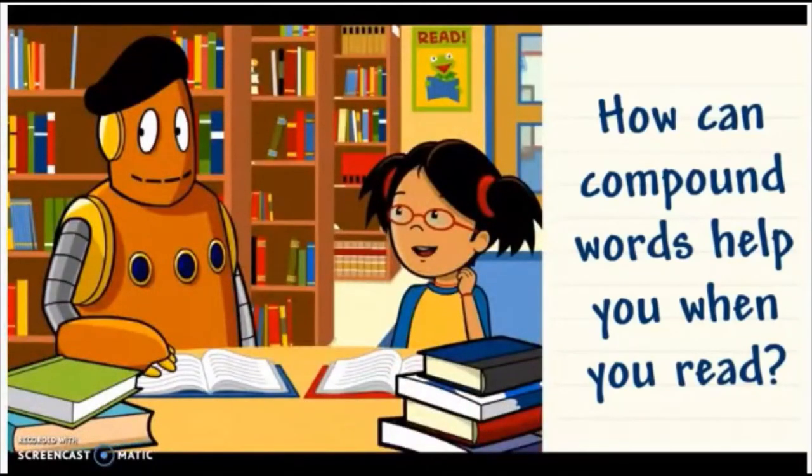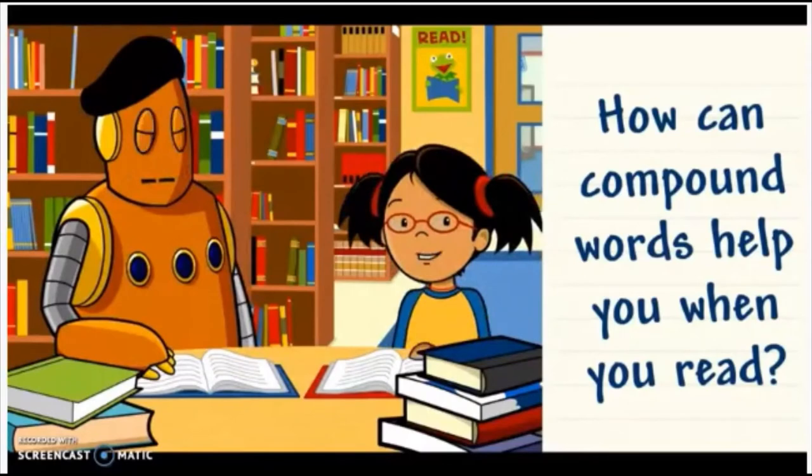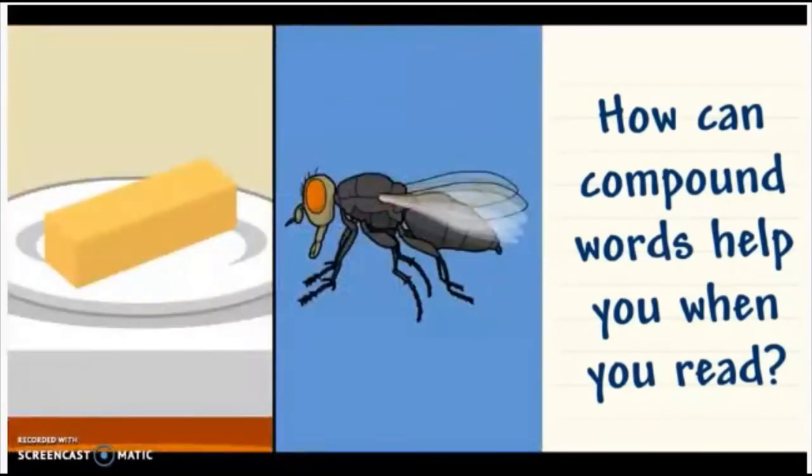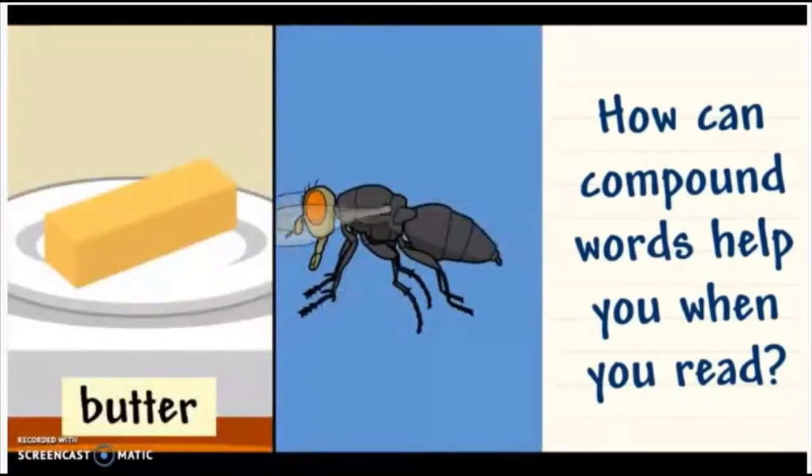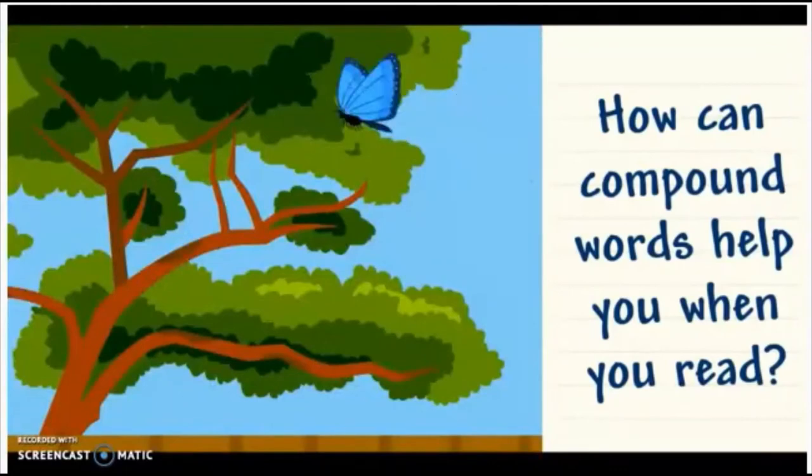So a globetrotter must be someone who runs around the world and visits different places. Sometimes you can't figure out a compound word by breaking it apart. When you join the words butter and fly, you don't get a flying stick of butter. You get an insect with wings.